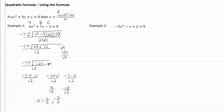Let's take a look at example two. Negative five is going to be my a, an invisible one for my b, and two is going to be my c. Now because my b is negative I'm going to have a positive here, so it'll be one plus or minus the square root of one squared minus four times our a, which is negative five, times our c, which is two, all over two times our a.